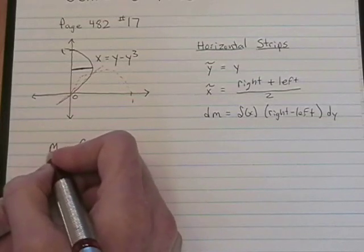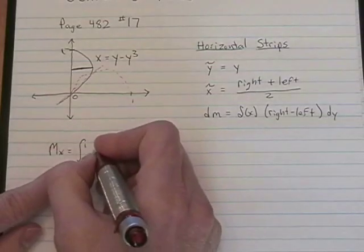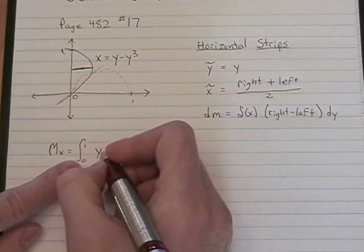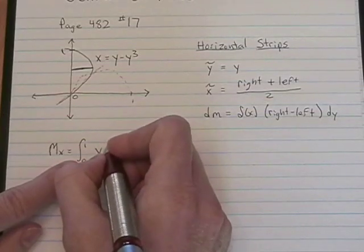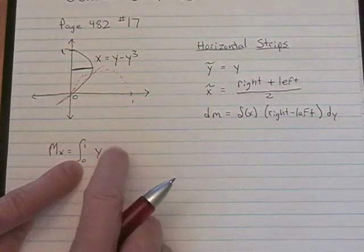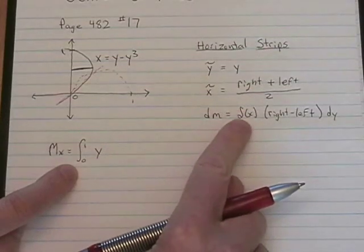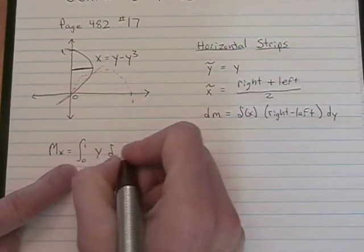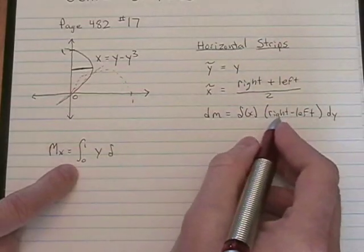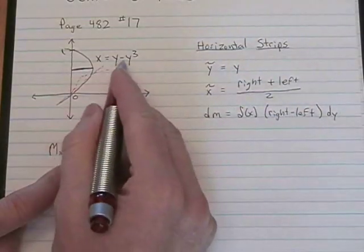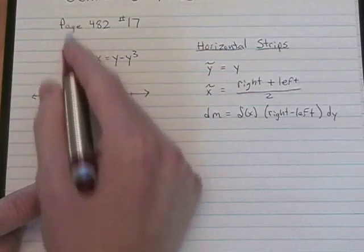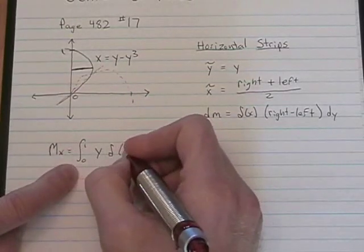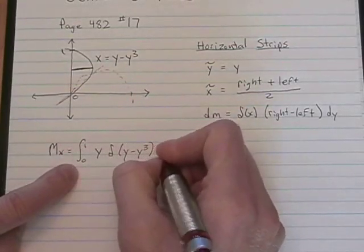The moment about the x-axis, m sub x, is tilde y, which is just y for us, times dm. This particular problem, our plate has a constant density, so we just have a delta. Right minus left, for us, is just going to be y minus y cubed, because the left-hand side is 0, and then dy.